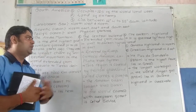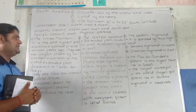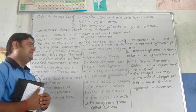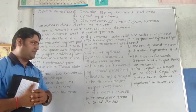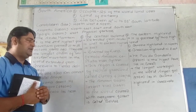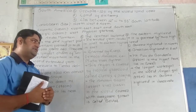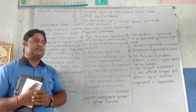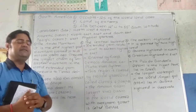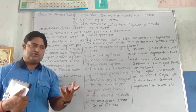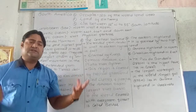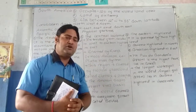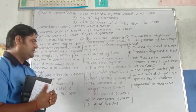Now, the second landform is the Central Lowland, which extends from the Andes in the west to the Eastern Highland in the east. The Central Lowland is drained by many rivers like the Orinoco, the Amazon, and the La Plata river system. This region is covered by tropical grasslands, also known as Pampas, especially in Argentina — which is why questions are asked in examinations about why Argentina exports a huge amount of meat all over the world.